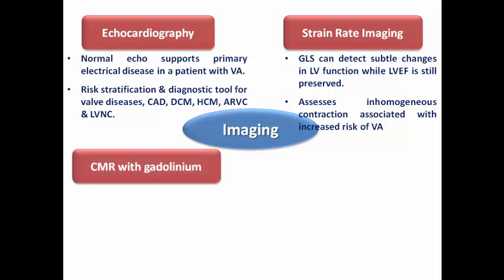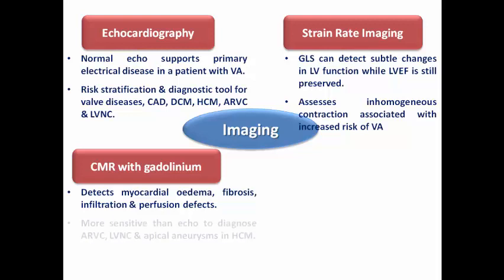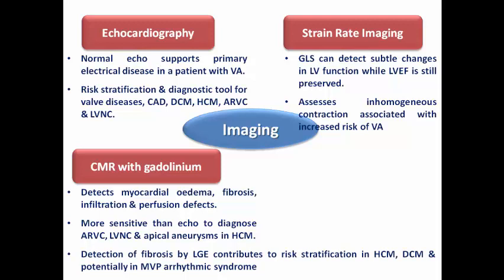Cardiac MRI with gadolinium is one of the essential tests in the workup of ventricular arrhythmia or survivors of sudden cardiac death. Through tissue characterization it detects myocardial edema in acute myocarditis, fibrosis in cardiomyopathy, infiltration, and perfusion defects in ischemic patients. It is more sensitive than echo for ARVC, LV non-compaction, and apical aneurysms in hypertrophic cardiomyopathy. Late gadolinium enhancement quantifies scar, contributing to risk stratification in hypertrophic, dilated, and potentially mitral valve prolapse arrhythmic syndrome — the larger the scar area, the higher the risk.